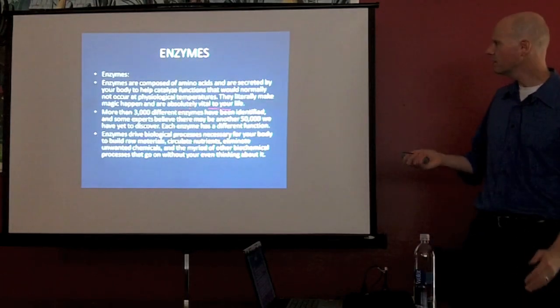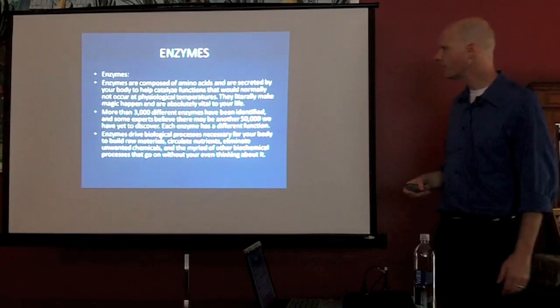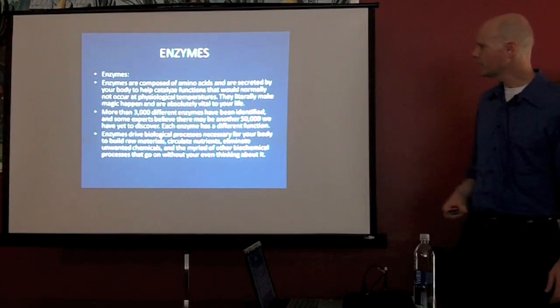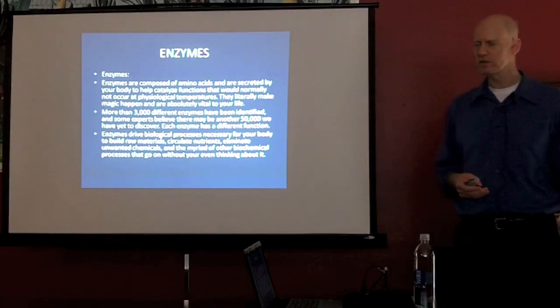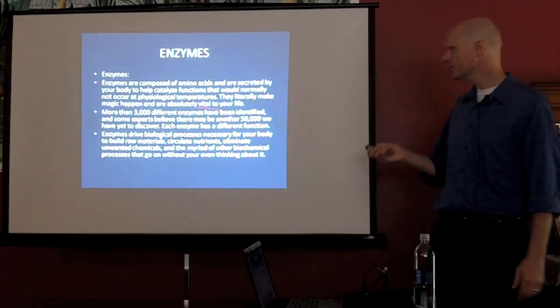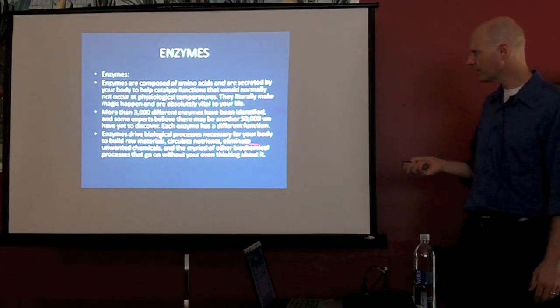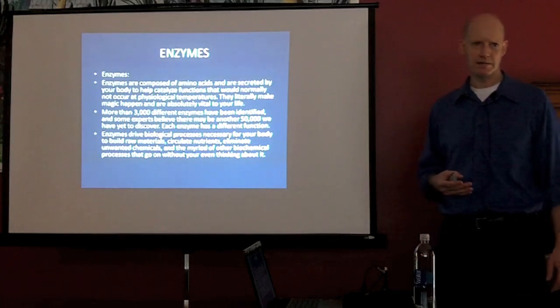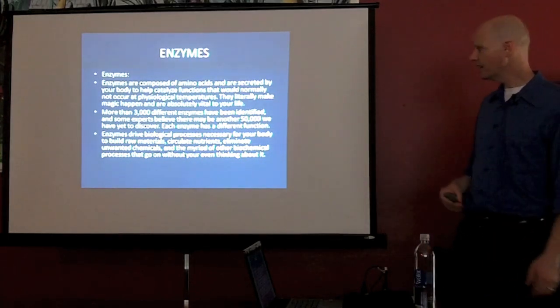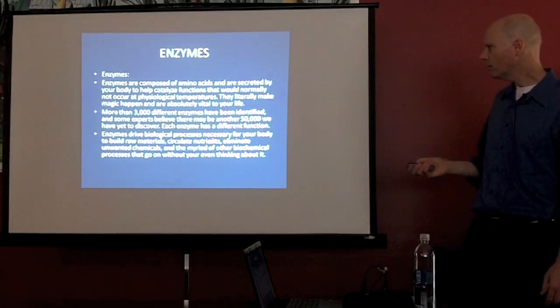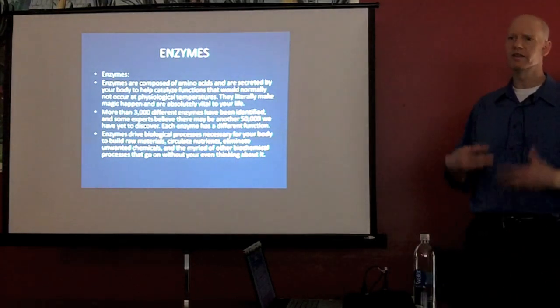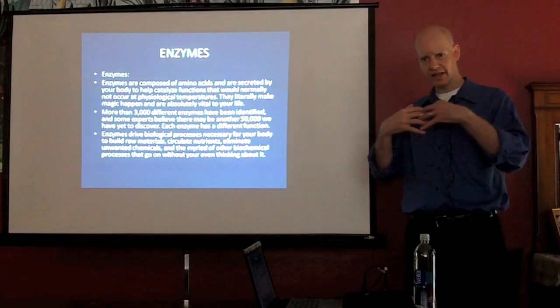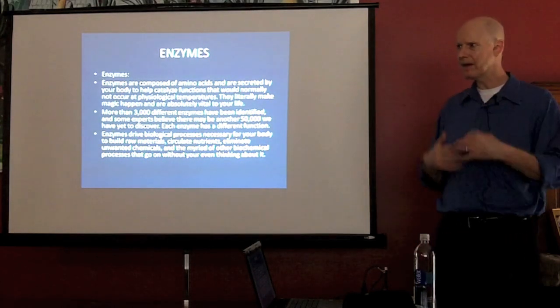So enzymes, we were talking a bit about them and they help to catalyze different functions. They help with our physiological temperatures, with almost every aspect of our life. They're critically important and there's thousands of different enzymes here. Some experts believe over 50,000 enzymes that are out there that we haven't yet even discovered. They help with building our raw materials, circulating nutrients, eliminating chemicals in our body, even help with life when you are born. When the egg and sperm meet, that is an enzymatic action there.